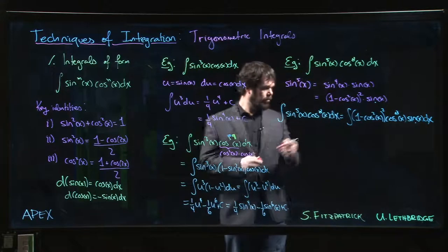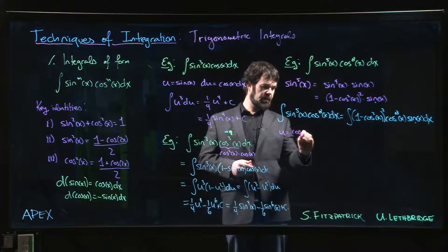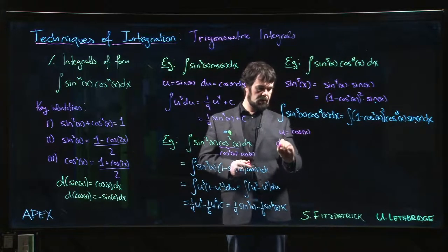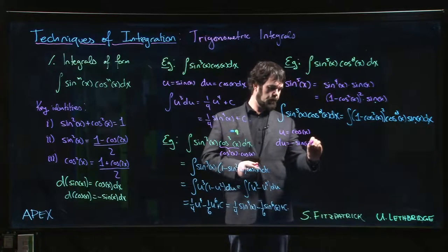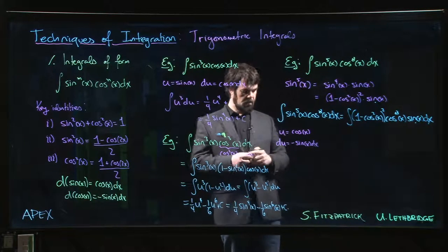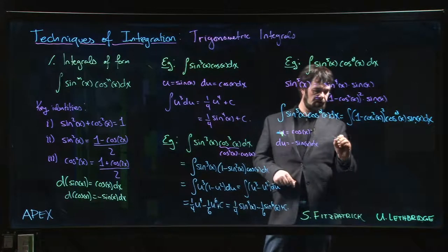Now we make our u substitution. This time, of course, u is going to have to equal cosine, du will be negative sine. So when we substitute, we get a sign change - that minus sign, let's put it right up front of the integral.